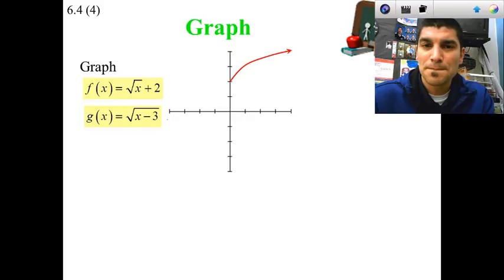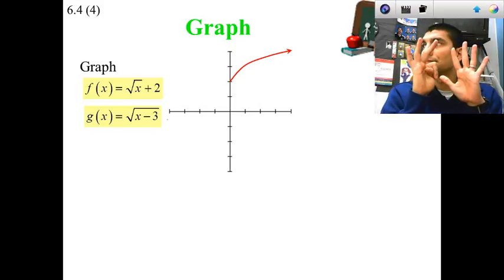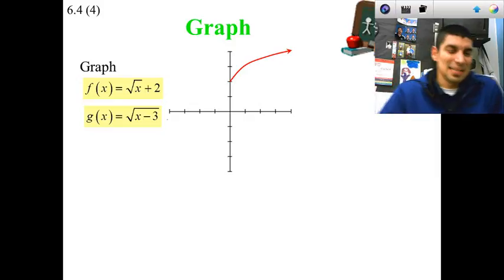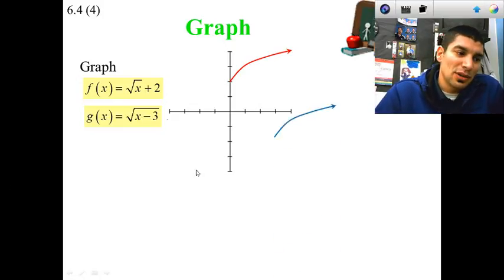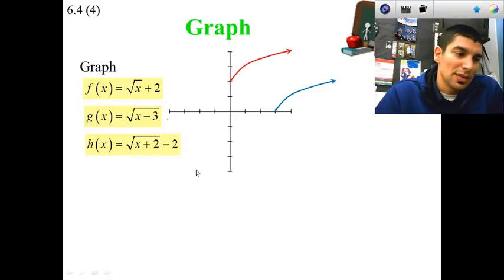Ten seconds, which way is it going to shift? I'm hoping you see this is happening inside the function and it's touching the x, so instead of left and right we're doing the opposite, so it's going to go to the right by three units.